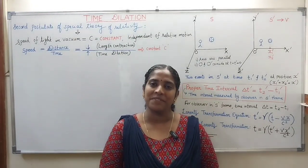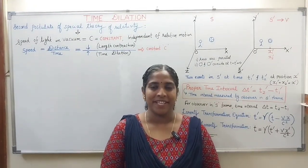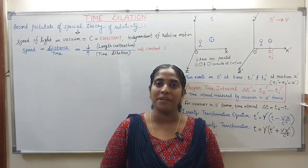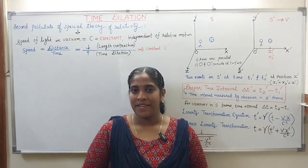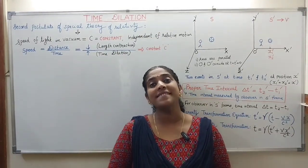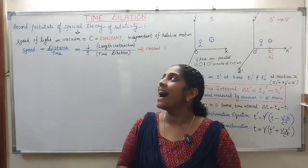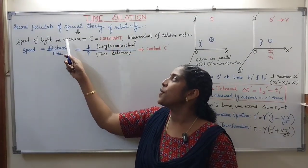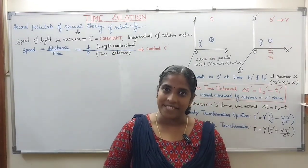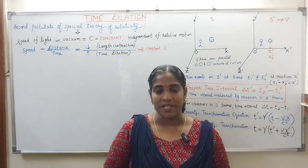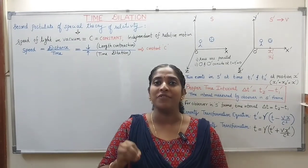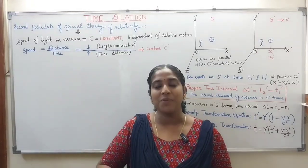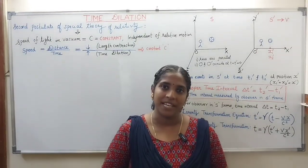There are two postulates in relation with the special theory of relativity. The first postulate is: all the laws of physics have the identical form in all inertial frames of reference. The second postulate is about the constancy of the speed of light. According to the second postulate, the speed of light in vacuum remains constant — 3×10⁸ meter per second — and is independent of the relative motion of the light source or the observer.